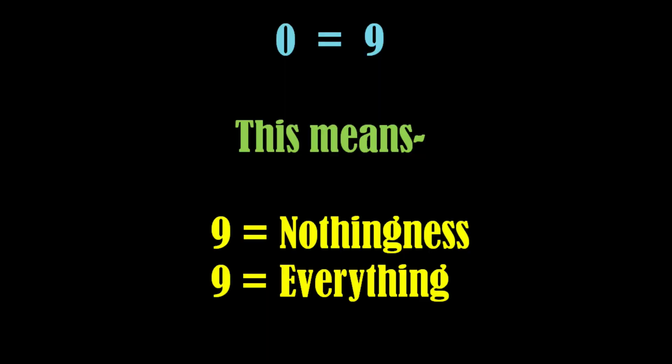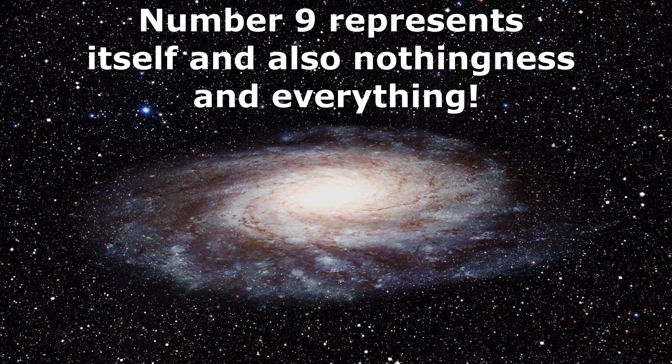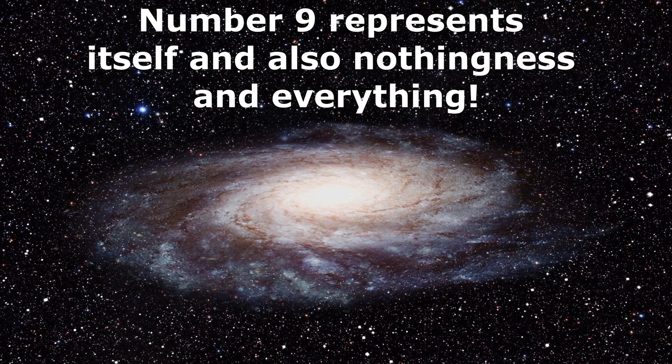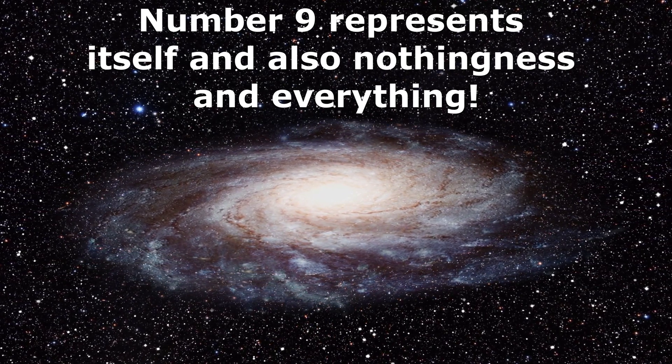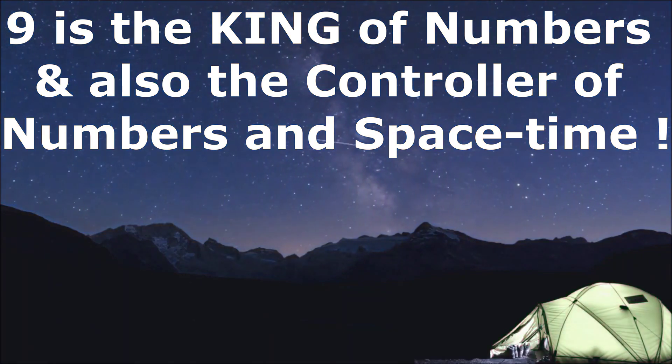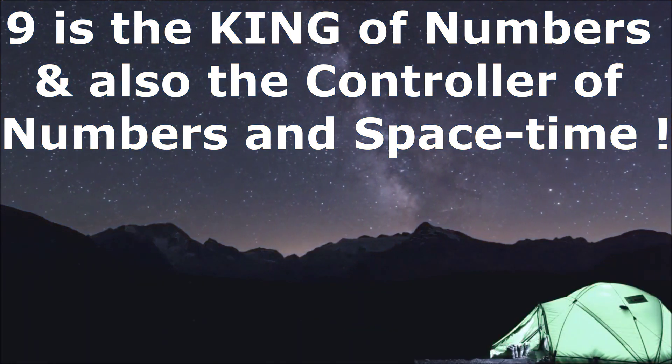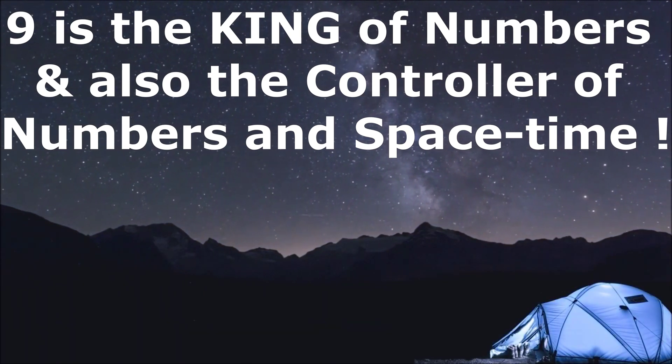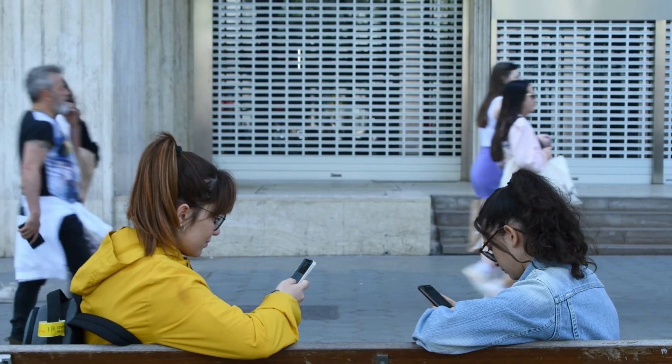Thus we can equate 0 with 9, signifying nothingness. In this way, the number 9 represents itself and also nothingness and everything. 9 is the king of all the numbers, as it controls all the other numbers and even space-time.